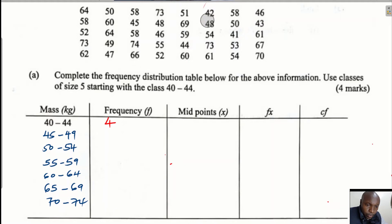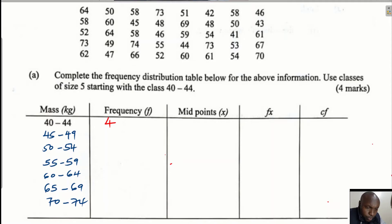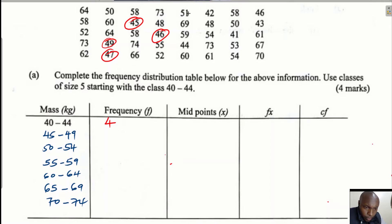Next, the values between 45 and 49. Looking through the data for 45 to 49: there is one, another one, another one further down. Counting them all: one, two, three, four, five, six, seven — there are seven values in the class 45 to 49.